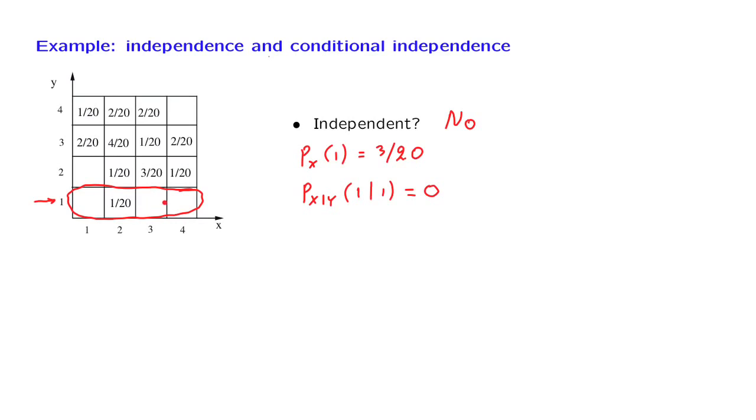So again, intuitively, in the beginning, we thought that x equal to 1 was possible. But information given by y, namely that y is equal to 1, tells us that actually x equals to 1 is impossible. Information about y changed our beliefs about x. So x and y are dependent.